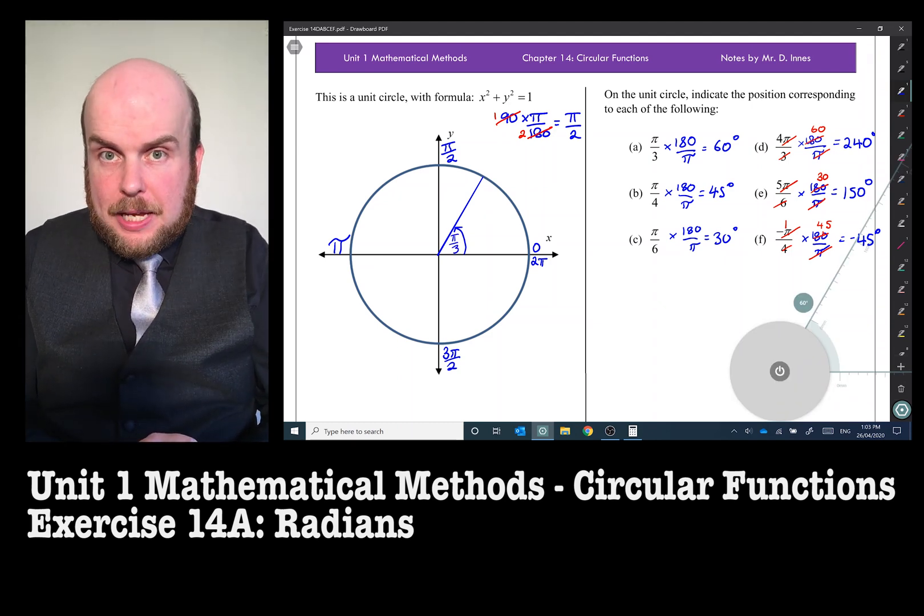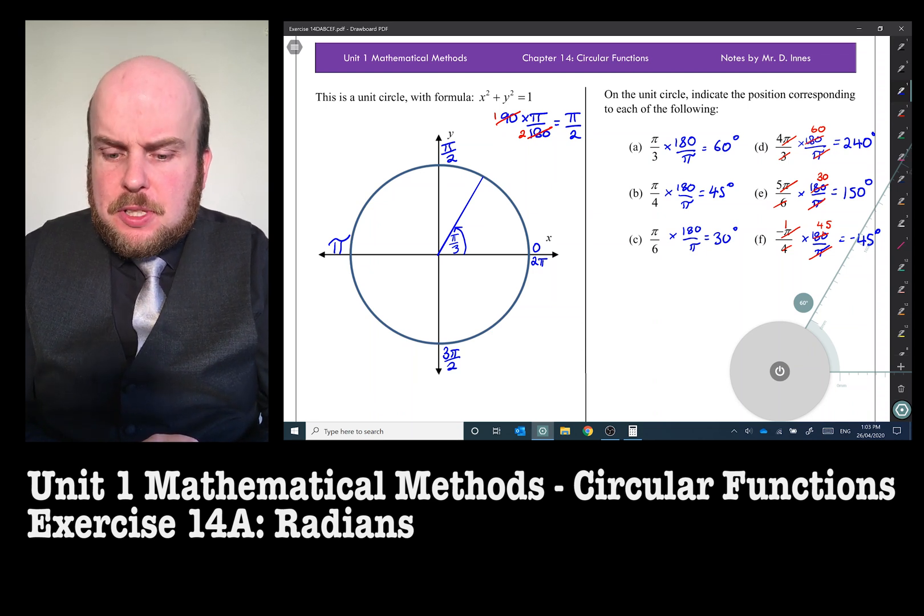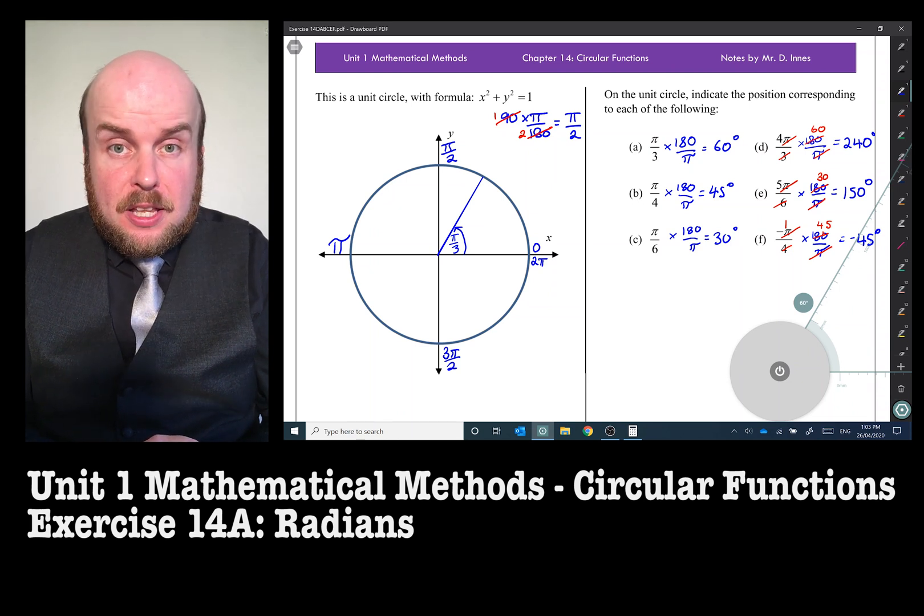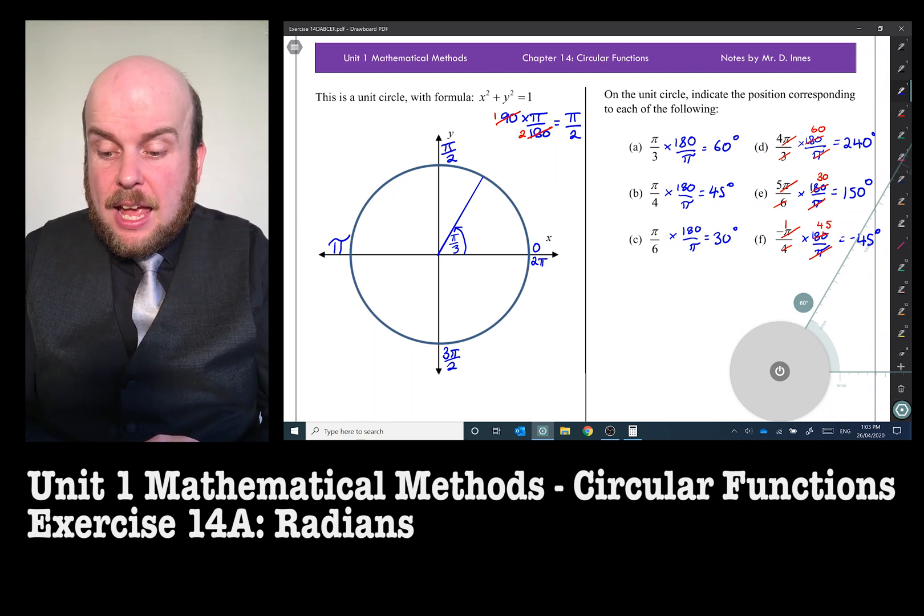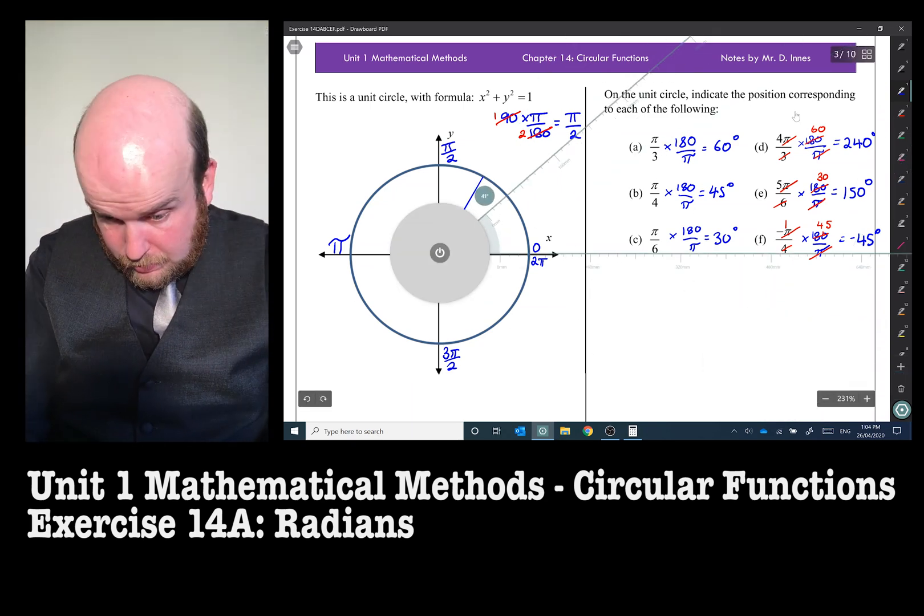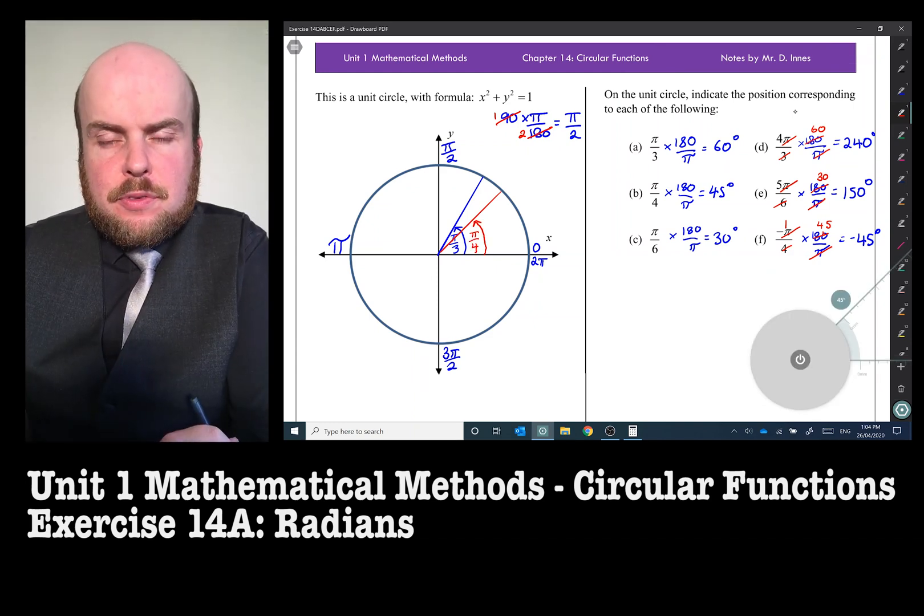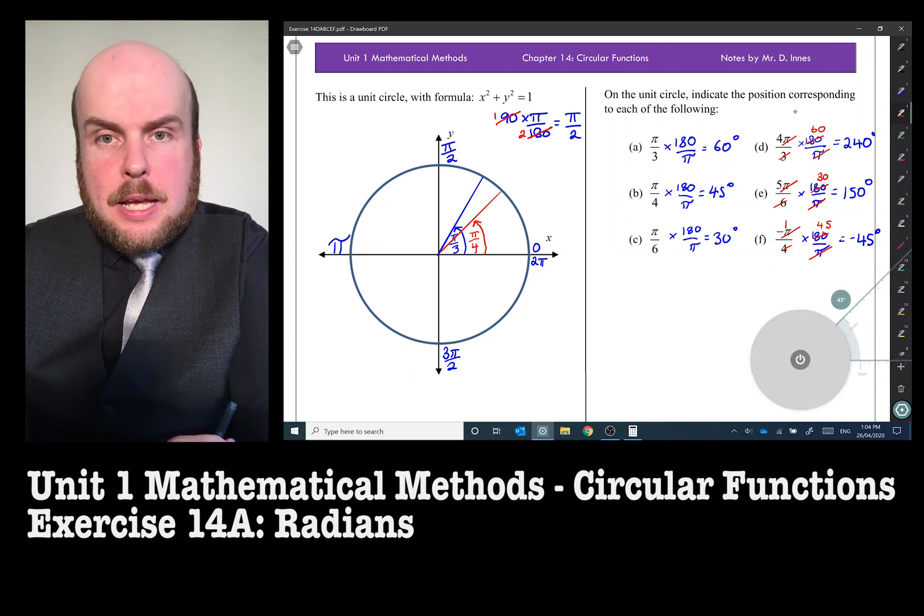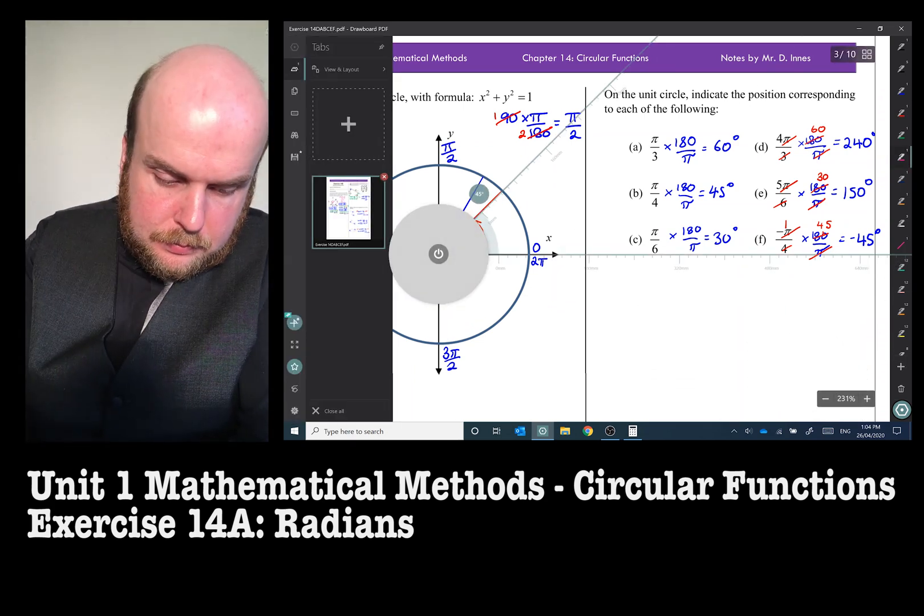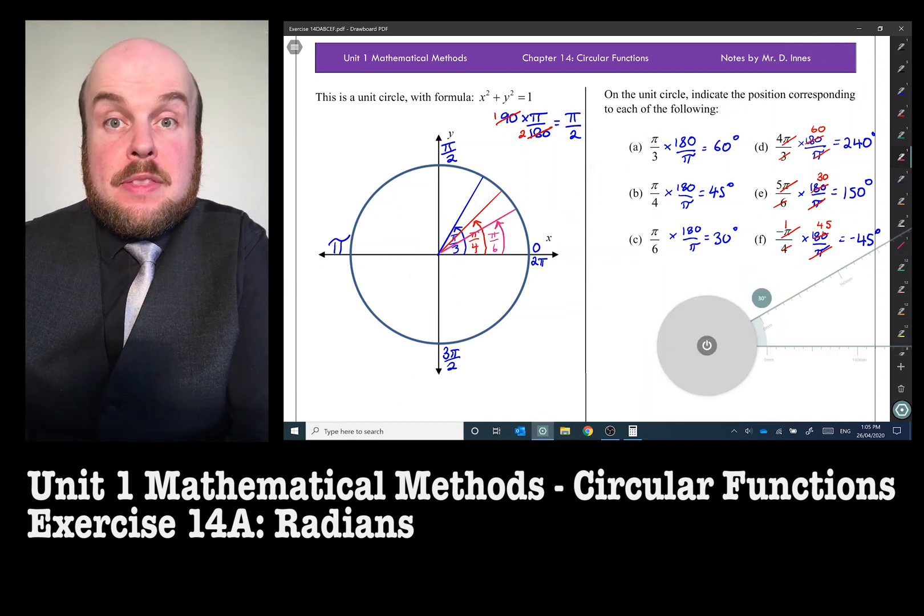And there's π on 3. The next one I'm going to do is 45 degrees. Now π on 4 will be smaller than π on 3, because a quarter is smaller than a third, and also smaller than a half. And 45 degrees is smaller than 60 degrees. There's π on 4. And now it's time to get π on 6, which is 30 degrees, which will be even smaller. And there's π on 6.